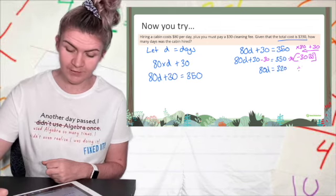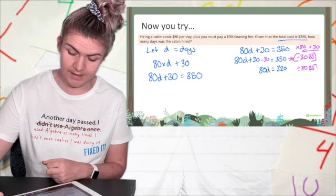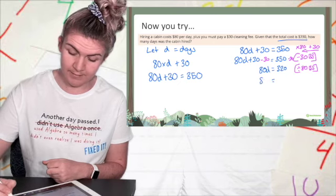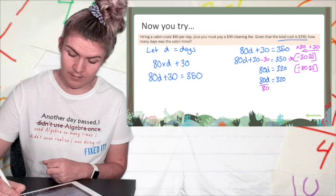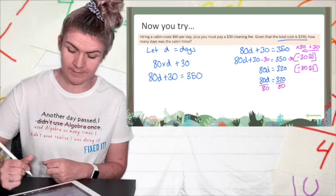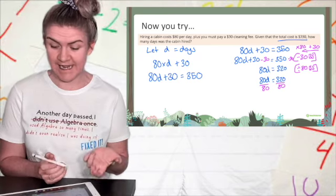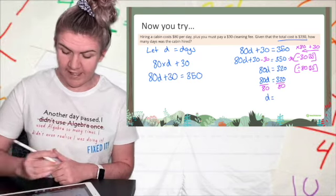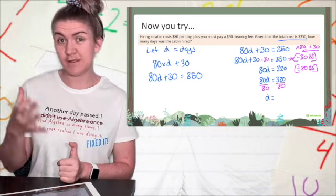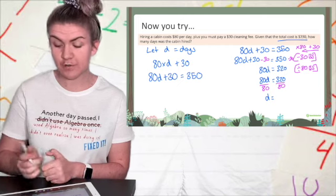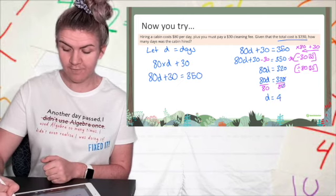Now I've got to divide by 80 on both sides. I'm writing it out. 80d, 320, 80, 80. My 80 and 80 cancel, leaving me with d. And now 320 divided by 80. Well, the 0 and the 0 divide to cancel, so I've got 32 divided by 8, which is 4.